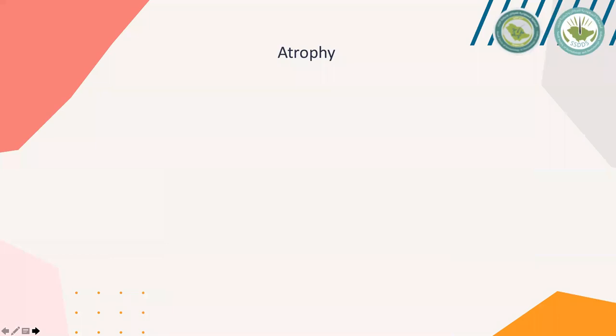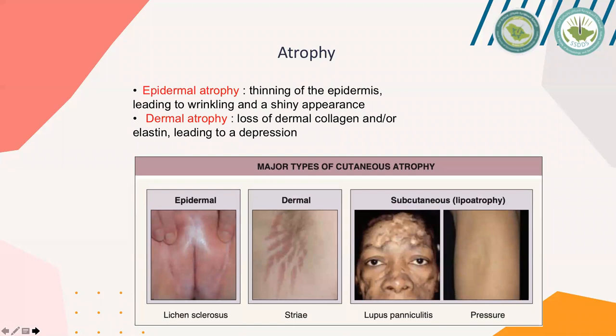Atrophy — 'a' means no, 'trophy' means growth, so literally it means no growth. It could involve any layer: epidermal, dermal, or subcutaneous, the last also called lipoatrophy. A clinical example of epidermal atrophy is lichen sclerosus; the skin appears shiny and wrinkled. A clinical example of dermal atrophy is striae, manifested with high levels of steroids — either exogenous or endogenous as in Cushing syndrome — caused by loss of elastin and collagen in the dermal layer. Subcutaneous atrophy or lipoatrophy is seen in lupus panniculitis.